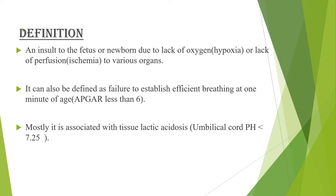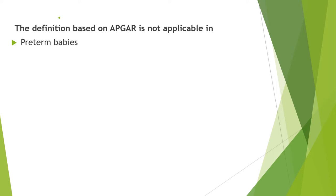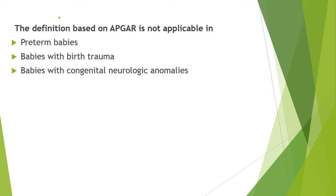This is used as a diagnostic criteria for most centers. It is mostly associated with tissue lactic acidosis or umbilical cord pH less than 7.5. The definition based on Apgar is not applicable in preterm babies, in babies with birth trauma, and in babies with congenital neurologic anomalies. So we apply the Apgar score as a definition for perinatal asphyxia only for those who are term, who do not have birth trauma, and who do not have congenital neurological anomalies.